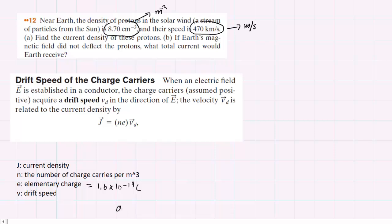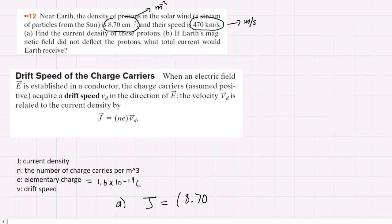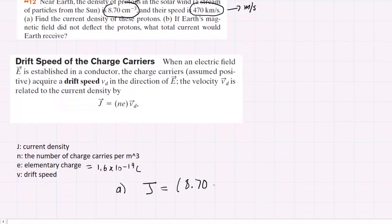So we'll go ahead and set up the calculation for current density, which again is J, and this will equal the value of N, 8.7. They wrote it as centimeters to the negative 3. You might remember from a math class that centimeters to the negative 3 can actually be written as centimeters to the positive 3, as long as you put it in the denominator. So we choose to do it in that manner.